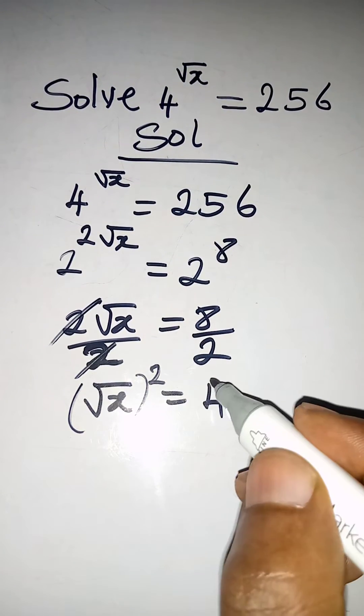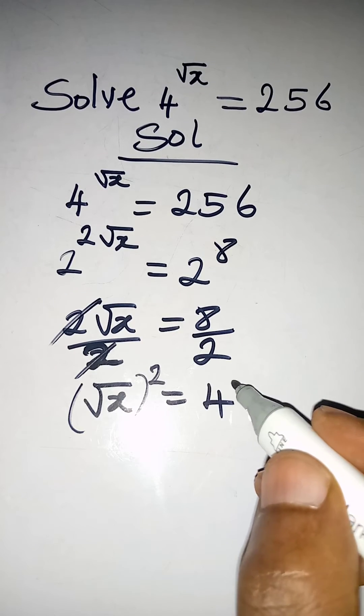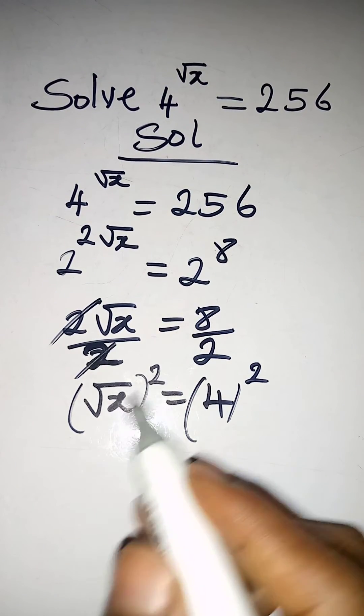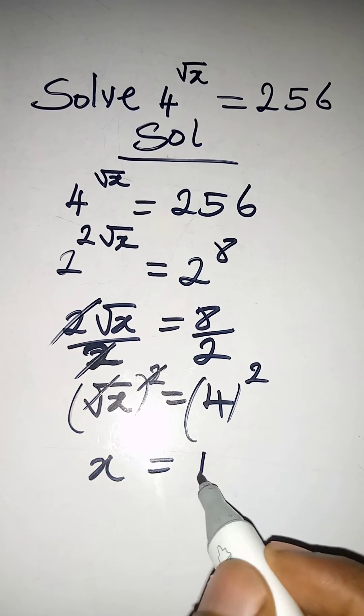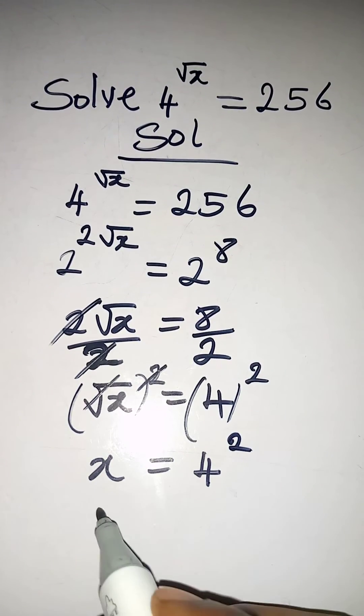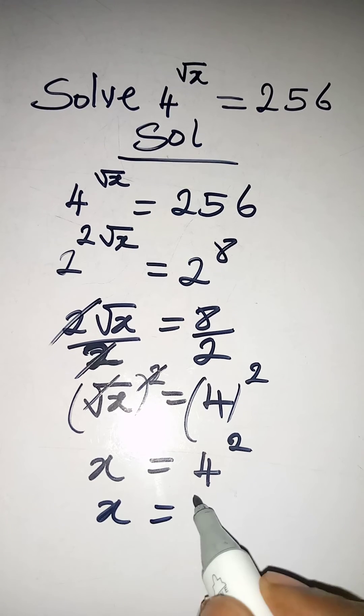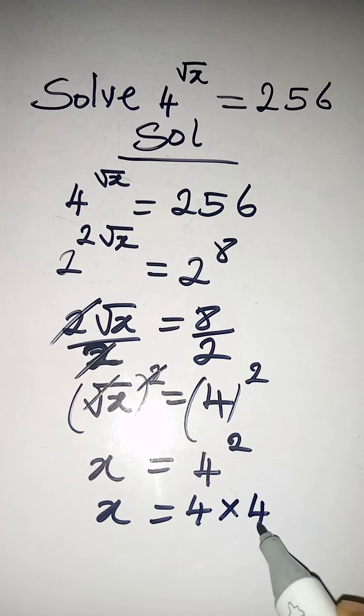So I will square this side too, so that the square root and the square will cancel. And then x will be equal to 4 squared. And what is 4 squared? 4 squared is 4 times 4.